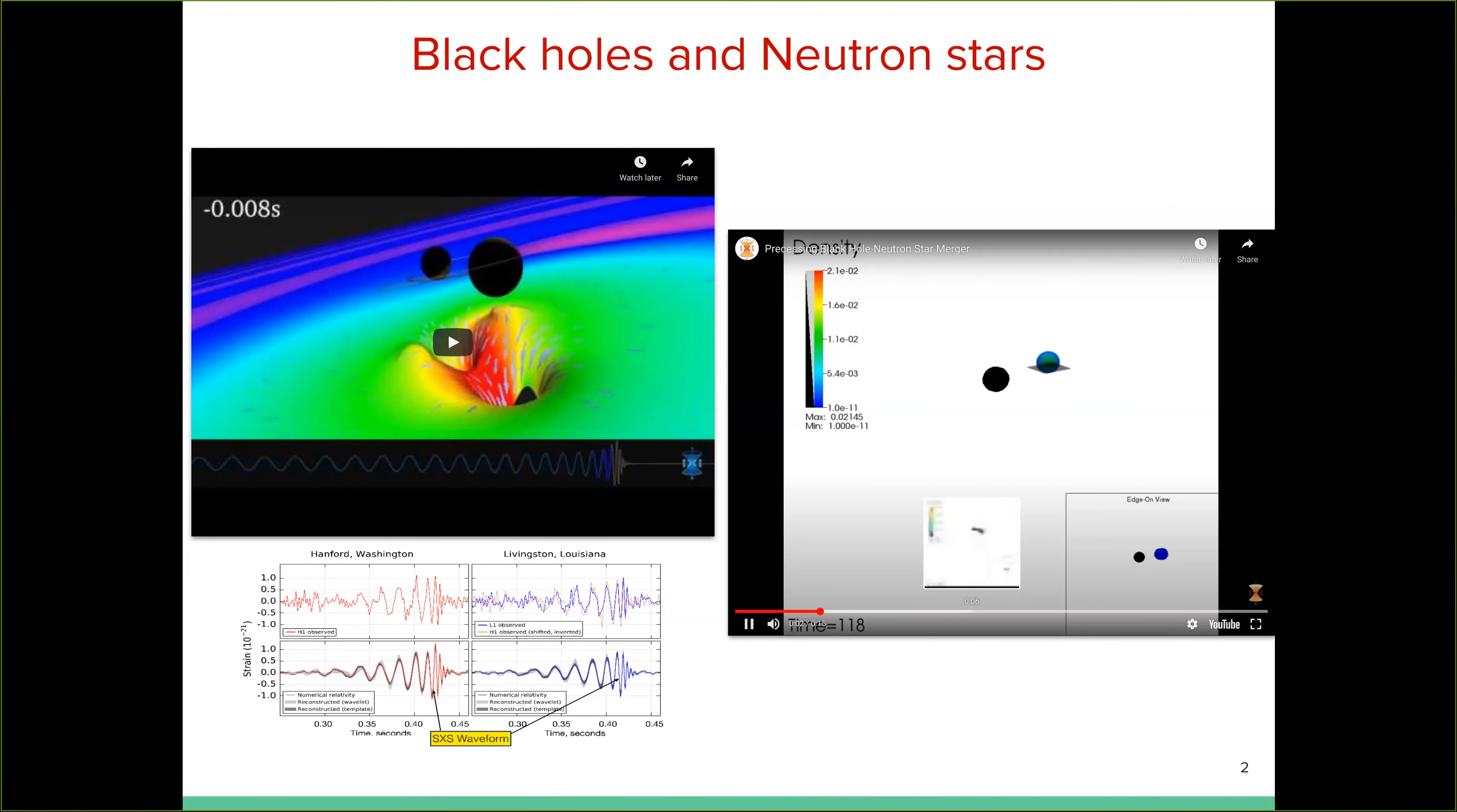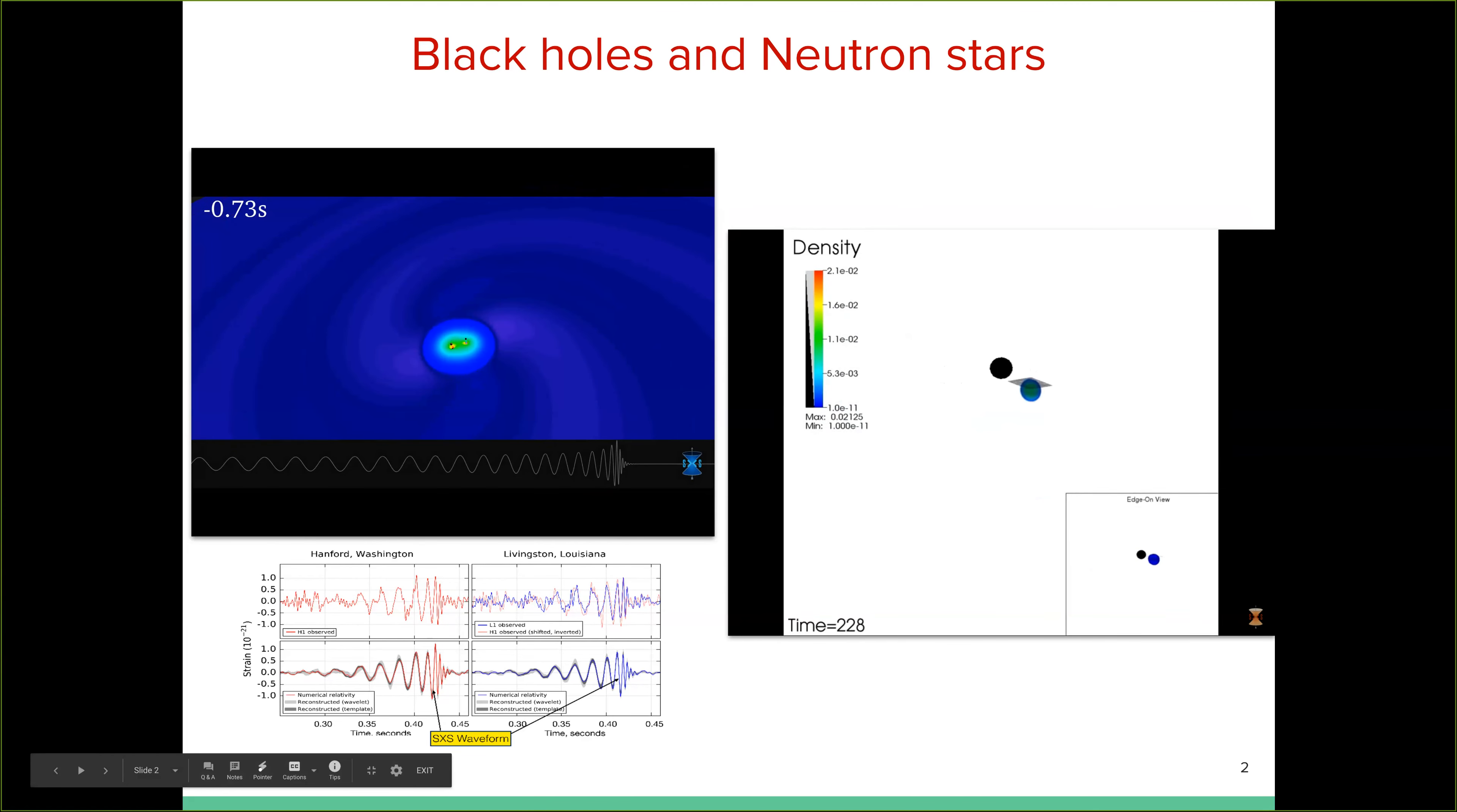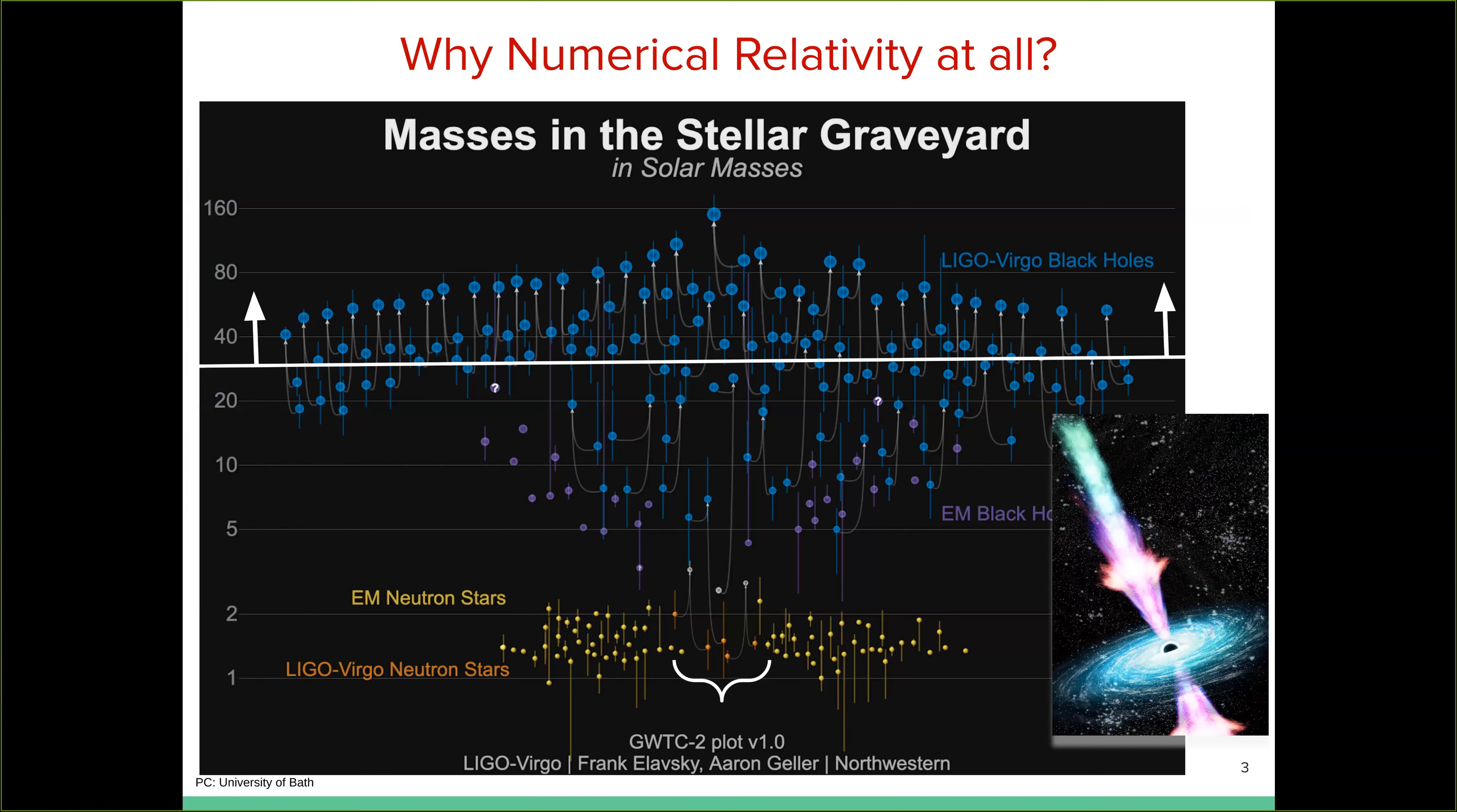Right. And so this is again, an example of an event that we haven't seen yet in the gravitational wave spectrum, but we hope to be able to see in the future. So these are the kinds of problems that I'll work on, in the field of numerical relativity and why are they of interest?